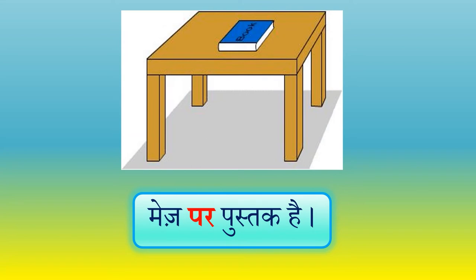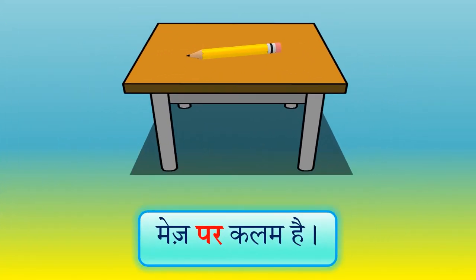वीडियो पसंद आया बच्चो? अब यहाँ पर देखिए - पुस्तक कहाँ है? बोलिए - हाँ, मेज पर। तो मेरे साथ बोलिए - मेज पर पुस्तक है। फिर से बोलिए - मेज पर पुस्तक है। अब यहाँ देखिए, मेज पर क्या है? हाँ, मेज पर कलम है। कलम कहाँ है बच्चो? बहुत अच्छा, मेज पर। तो बोलिए - मेज पर कलम है।